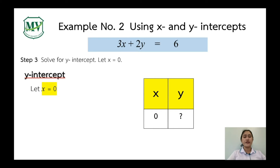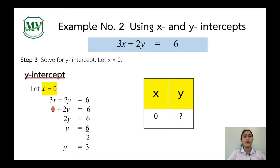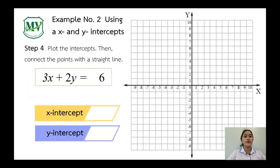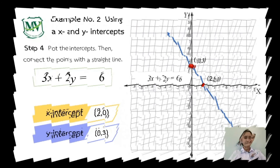Now let's solve for the y-intercept. x is always 0. So 0 plus 2y equals 6. Dividing both sides by 2, y equals 3. Our y-intercept is (0, 3). We plot the points on our Cartesian plane: x-intercept (2, 0) and y-intercept (0, 3). Connect the two points with a straight line. This is the line of 3x plus 2y equals 6.